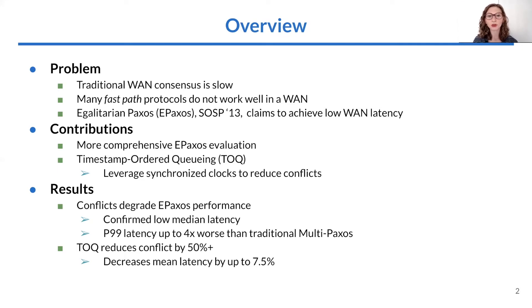Our EPaxos results were more nuanced than those of the original evaluation. While we confirmed that EPaxos achieves low median latency, we saw huge variance in performance across the workloads that we tested, and we measured high tail latencies, sometimes more than four times worse than traditional multipaxos. We also measured that TALK is effective at reducing conflicts by 50% to 100% depending on the workload, and reducing mean latency by up to 7.5% for high conflict workloads.